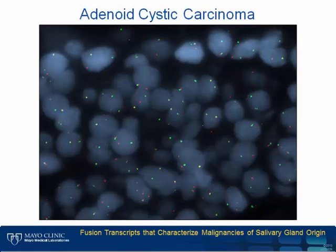This image shows disruption of the MYB gene in a case of adenoid cystic carcinoma. Intact MYB genes are represented by red and green signals that are immediately adjacent to one another, occasionally appearing as yellow or fused signals. Disrupted MYB genes are represented by red and green signals that are significantly separated from one another.